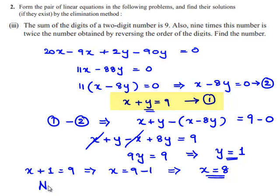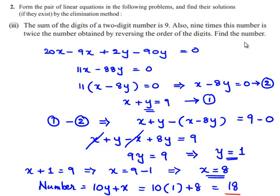So, the number is equal to 10y plus x. And the values of x and y are known to us which are 10 times 1 plus 8 which is 10 plus 8, nothing but 18. So, finally, we have obtained the number to be 18. The required number is 18.